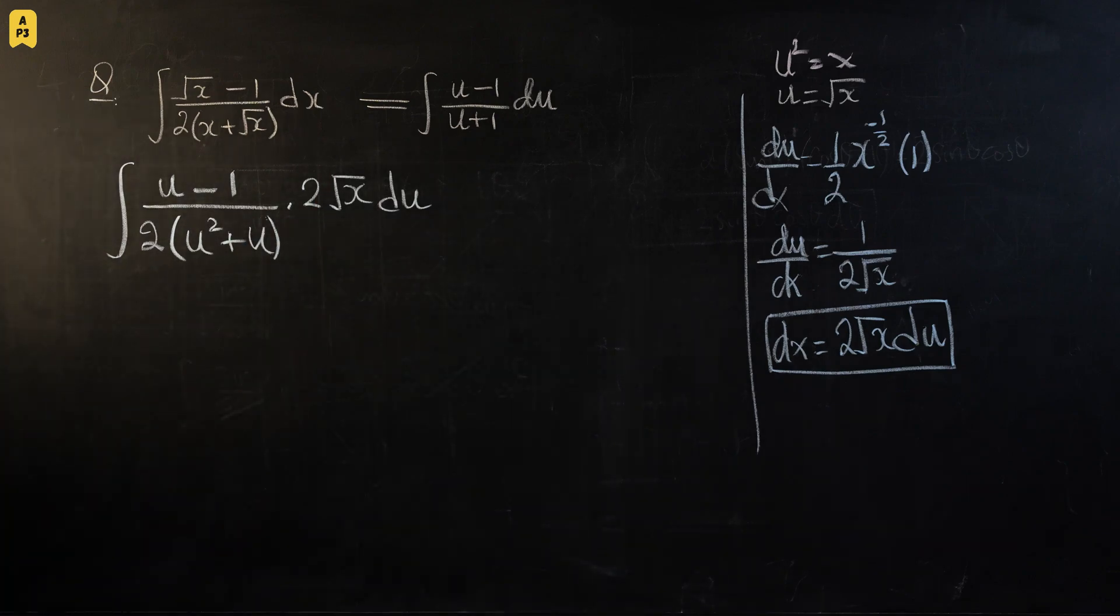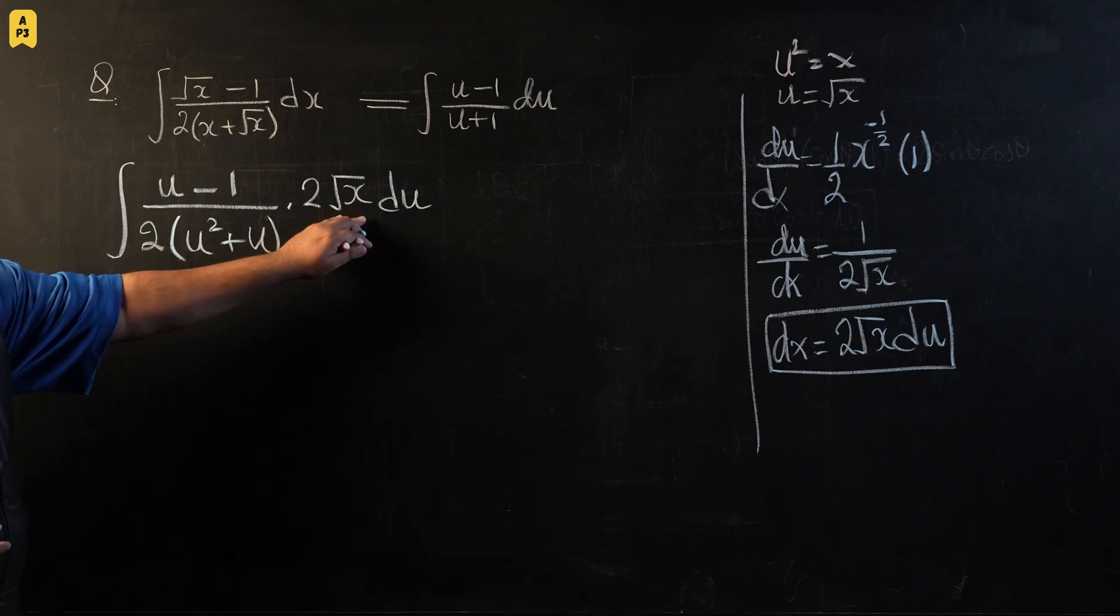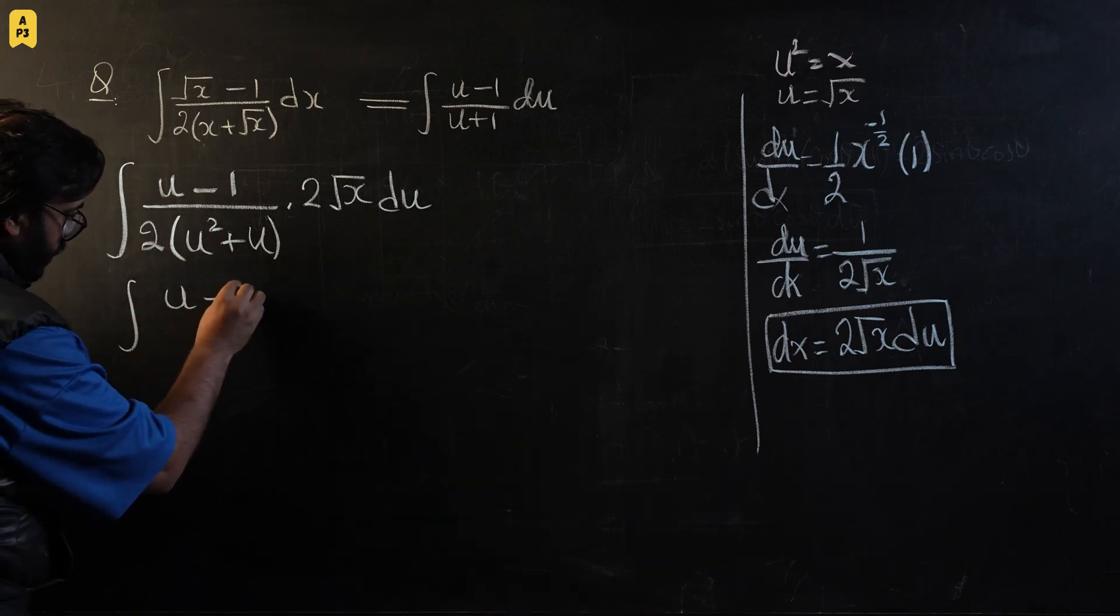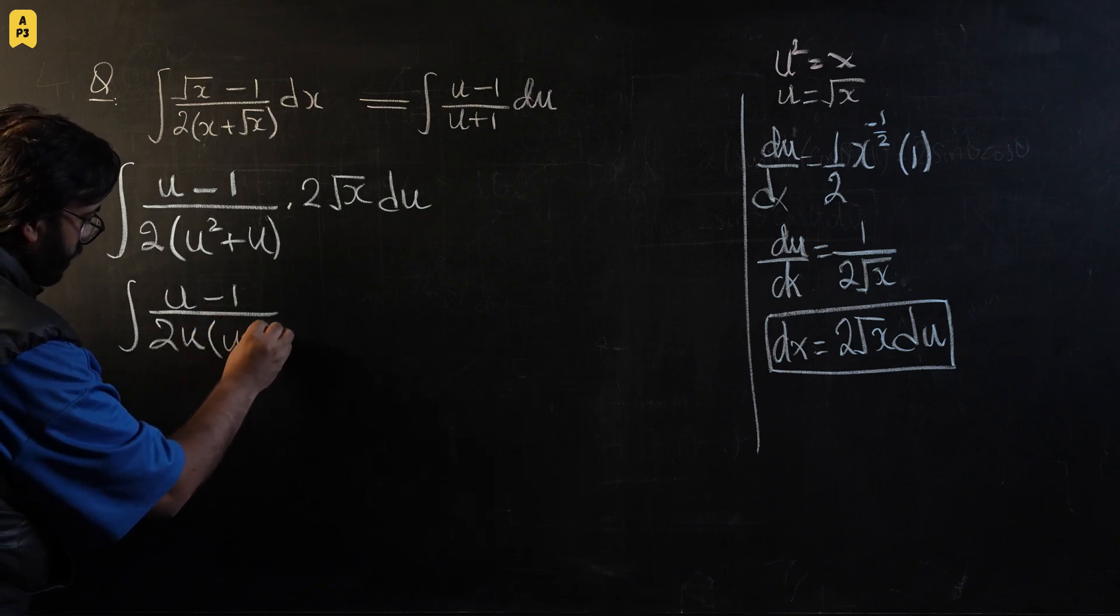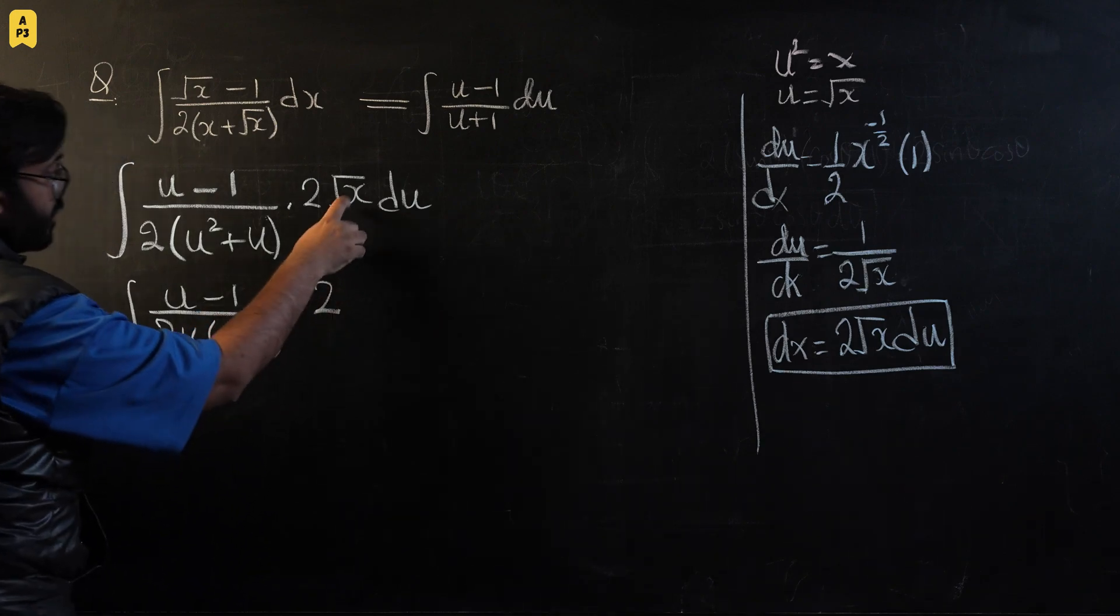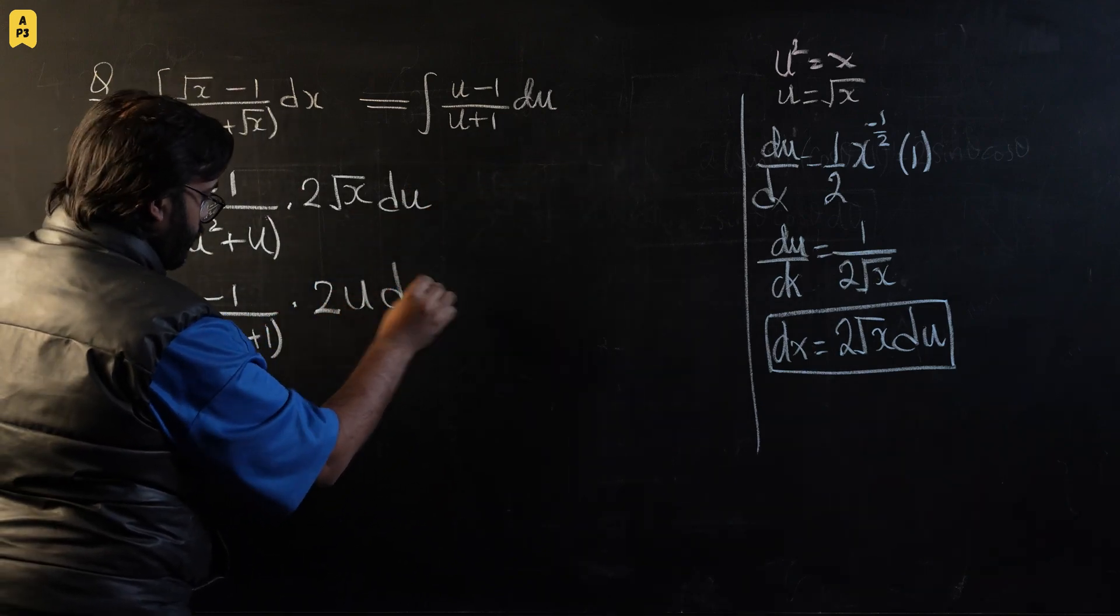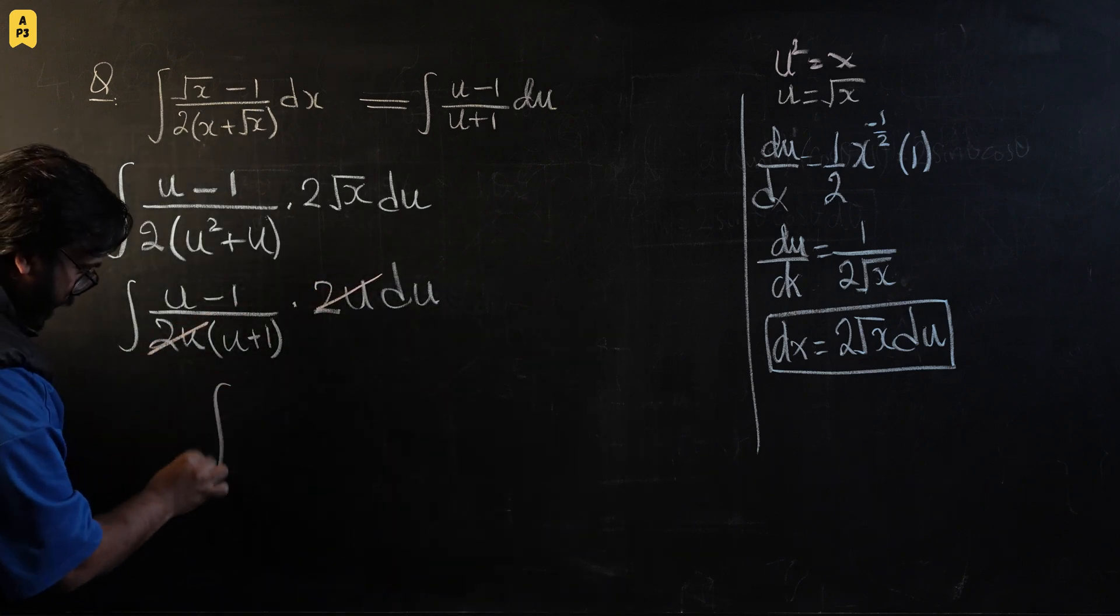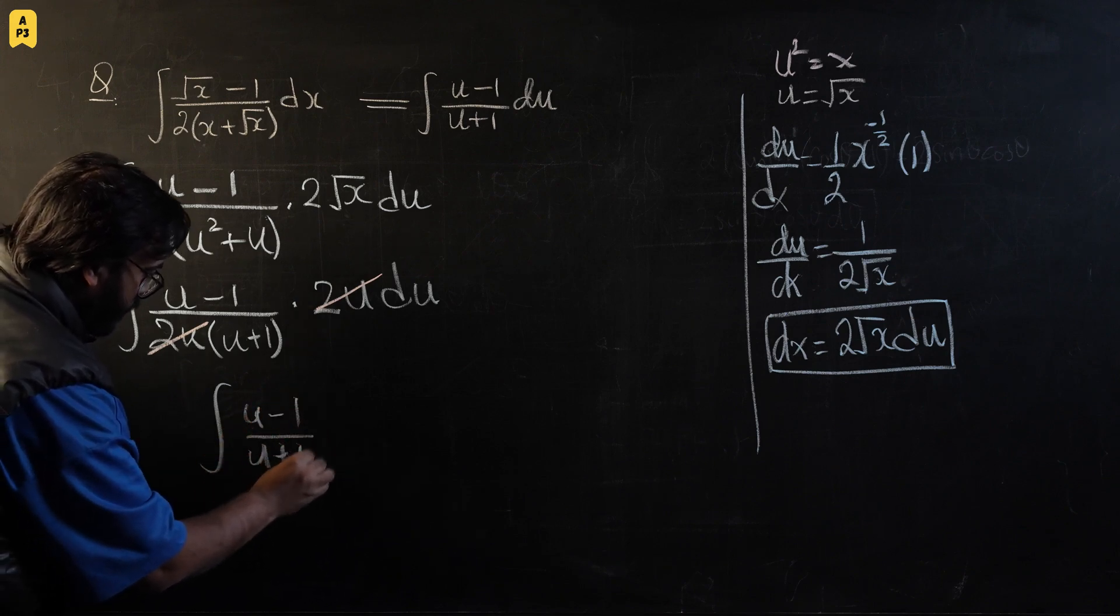Now let's do some simplifications whichever are possible over there. In the denominator I'm going to take u common and in the numerator I'm going to replace this square root of x with u in the next step. So this is u minus 1 over 2u times u plus 1 times 2. This square root of x will be u again times du. And you guys can see this 2u and 2u will cancel straight away and we can bring our expression to our desired form u minus 1 over u plus 1 du.